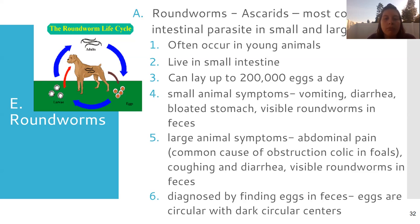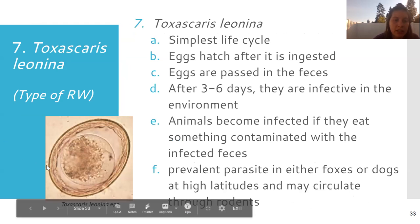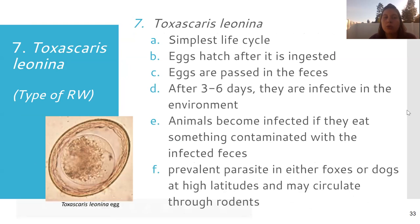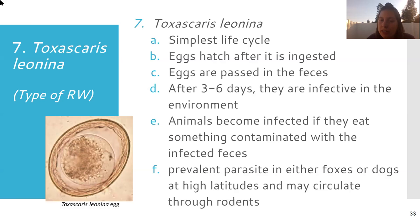You'll see vomiting, diarrhea, and bloated stomach with a lot of different conditions when animals are sick, so a lot of times especially with internal parasites you're going to want to do a fecal float — check their feces — because if they have worms you're gonna see the eggs in the feces, or you might get lucky and see whole adults coming out. In your notes you should have little squares beside each type of internal parasite — in those squares I want you to draw what the egg looks like, because they can all look really similar if you don't know what you're looking for.